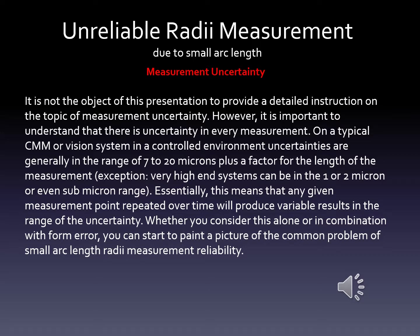Now we're going to introduce measurement uncertainty as the primary contributor to unreliable radii measurement with a small arc length. It's not the object of this presentation to provide detailed instruction on measurement uncertainty or illustrate its complex mathematics. However, it is important to understand that there is uncertainty in every measurement that we take. On a typical coordinate measuring machine or vision system used for measurement in a controlled environment, uncertainties are generally in the range of about 7 to 20 microns. Very high-end systems can be in the 1 or 2 micron or even sub-micron range for calibration equipment. For laboratory-grade equipment commonly used in industry, we're dealing with uncertainty in that range. Essentially, any given measurement point that is repeated over time will produce variable results within the range of that uncertainty.